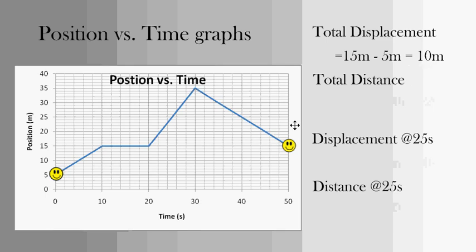To find the total distance, it's a little bit harder. I've got to add up each change in position. So, from 5 to 15 is 10, from 15 to 35 is 20, and then from 35 back to 15 is another 20. So, my total distance is 10 plus 20 plus 20, or 50.